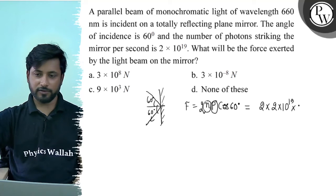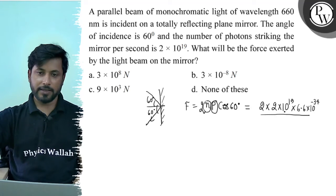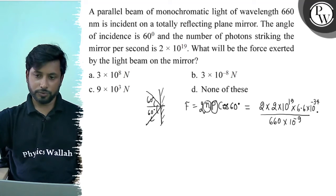OK children? Lambda is given as 660 nanometers. So, 660×10^-9, times cos 60, where the value of cos 60 is 1/2.